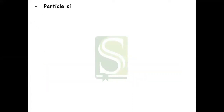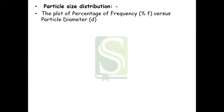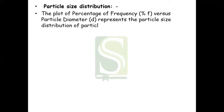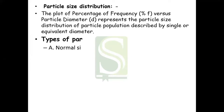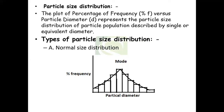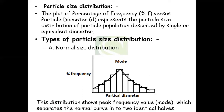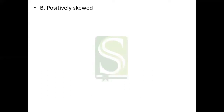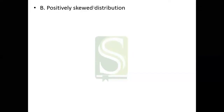Now we will see particle size distribution. The plot of percentage frequency versus particle diameter represents the particle size distribution of the particle population in any powder. It is described by single or equivalent diameter. The first type is normal size distribution — the graph of percent frequency versus particle diameter gives a symmetrical curve, which is termed normal size distribution. This distribution shows a peak frequency value which separates the normal curve into two identical halves.